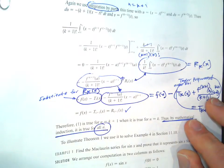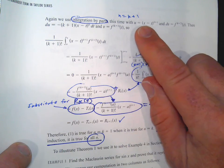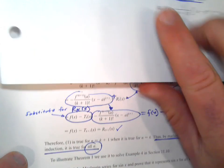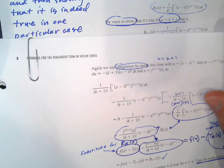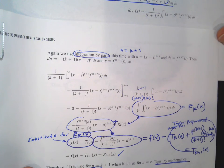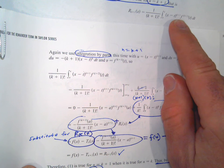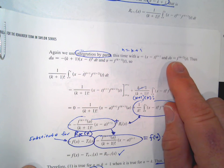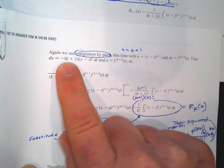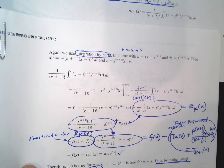We've got to do integration by parts again. We're trying to do integration by parts for the n equals k plus 1 case. We're going to set u equal to x minus t to the k plus 1, and dv equal to the k plus 2 derivative. Taking the derivative of u, we get a k plus 1 out front with an extra negative because of the chain rule. If you integrate dv, you get the k plus 1 derivative.